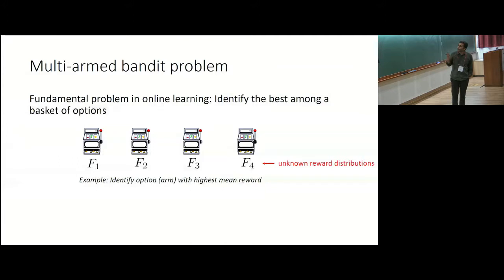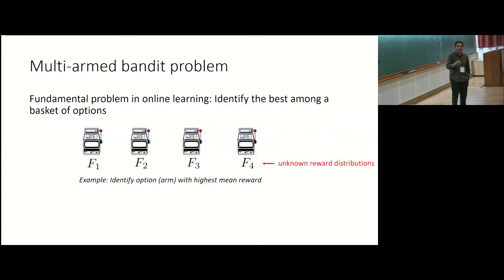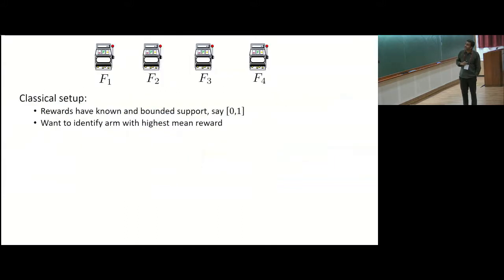To be concrete, suppose there are four options or arms. Each of these options is associated with a certain unknown reward distribution, and every time you pull the arm or choose this option, a sample from that distribution gets revealed to you. Your goal is to figure out which has the highest mean reward given these unknown distributions. So you sample these different arms repeatedly and use the information from the samples to figure out which is the best.